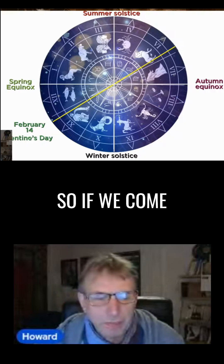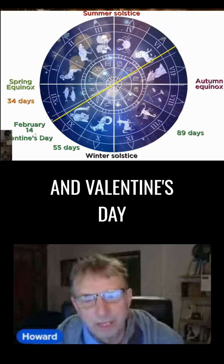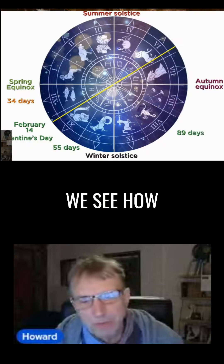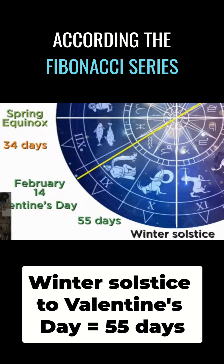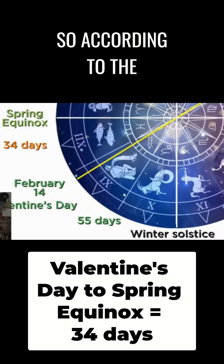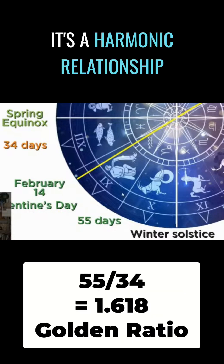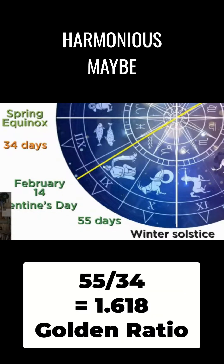Today we're talking about the calendar. So if we come back to February the 14th and Valentine's Day, we see how Valentine's Day cuts winter according to the Fibonacci series, and so according to the golden ratio. It's a harmonic — harmonious — relationship.